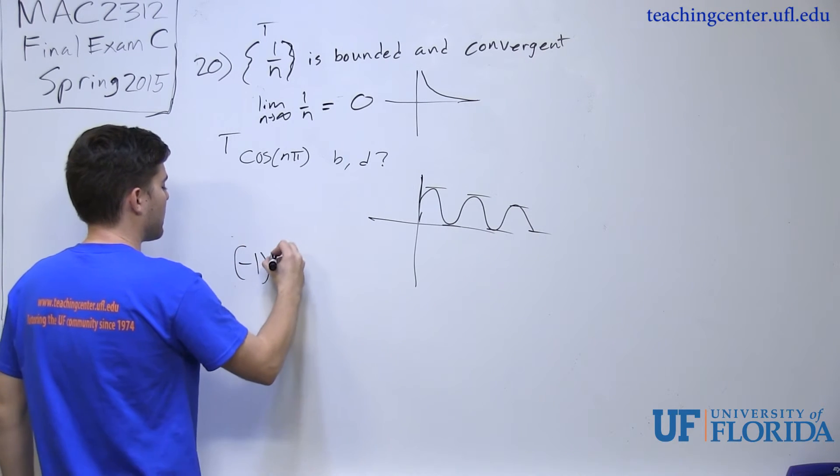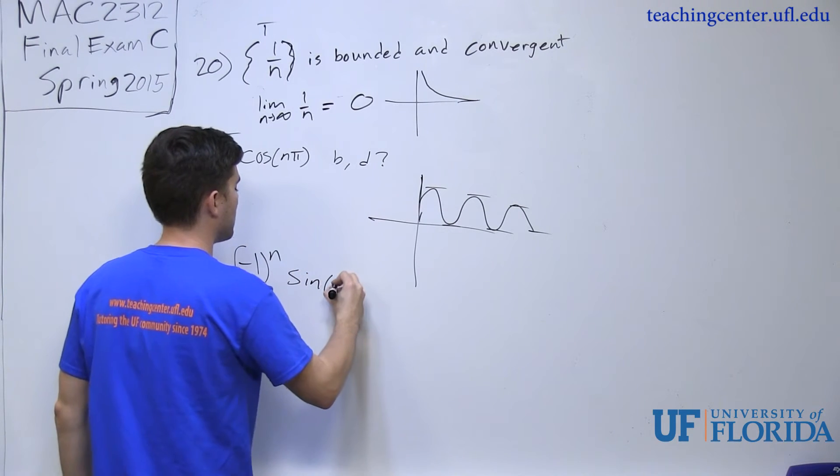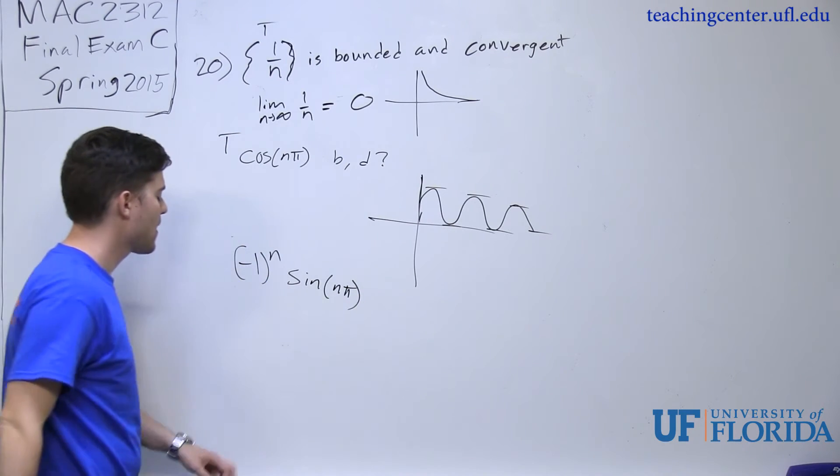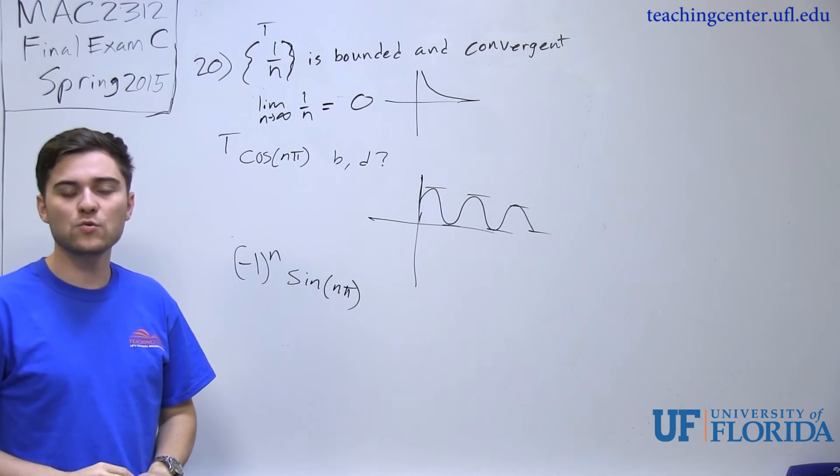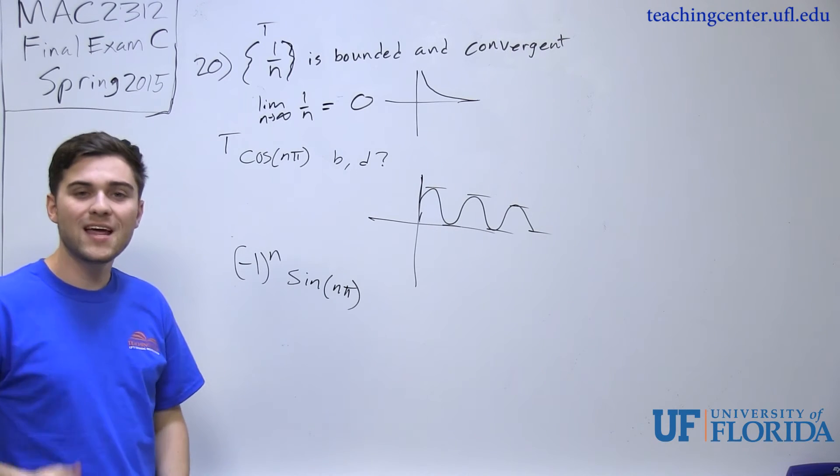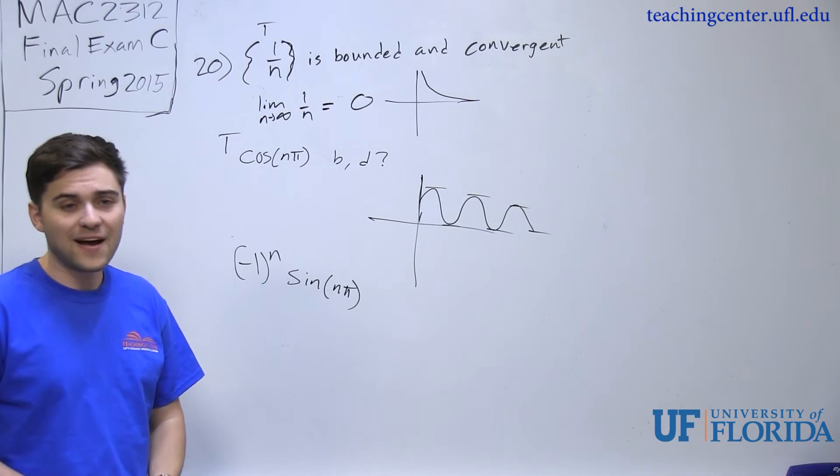Now we look at the last statement, negative 1 to the n, sine of n pi. Now when we look at this statement, it is asking the same thing that statement 2 is getting asked. Is it bounded and is it divergent? So it is in fact divergent.